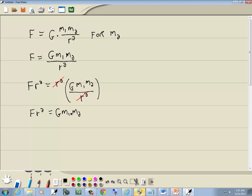Step 5, divide both sides by what's in front of or back of the variable we're solving for. We're solving for M sub 2. There's a G M sub 1 in front of it. So we're going to divide both sides by G M sub 1.